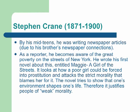Stephen Crane lived from 1871 to 1900. By his mid-teens, he was writing newspaper articles due to his brother's newspaper connections. As a reporter, he became aware of the great poverty on the streets of New York. He wrote his first novel about this, entitled Maggie: A Girl of the Streets. This novel looks at how a poor girl could be forced into prostitution, and attacks the strict morality that blames her for it.